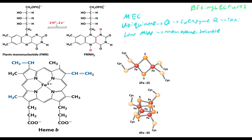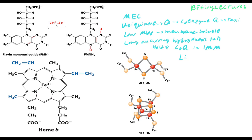Coenzyme Q has a long hydrophobic tail that anchors it in the inner mitochondrial membrane. Since it can pass through the membrane, and membranes are made of fats, coenzyme Q is lipid soluble. It can diffuse into the lipid bilayer. It acts as an electron taxi for complex 1 and complex 2 — the electrons coming out of complex 1 and complex 2 hitch a ride on coenzyme Q, which transports those electrons to complex 3.